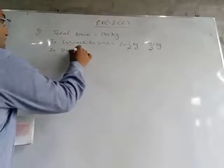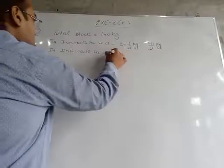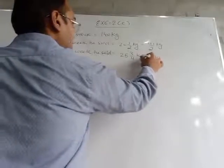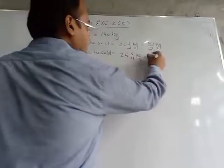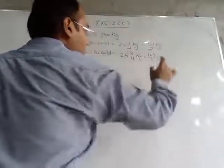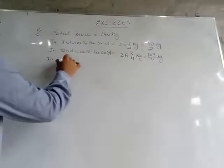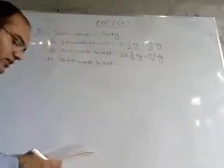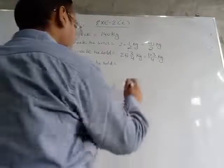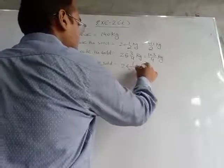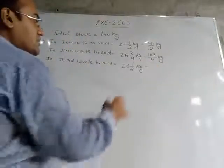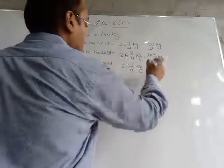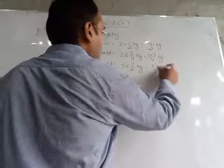In the second week he sold 25¾ kg, which converts to 103/4 kg of wheat. In the third week he sold 26½ kg, which converts to 53/2 kg of wheat.